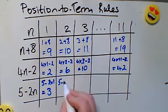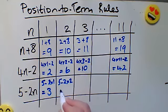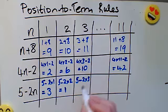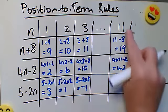The second term would be 5 take away 2 times 2, 5 take away 4 is 1. For the third term, 5 take away 2 times 3, that is negative 1.